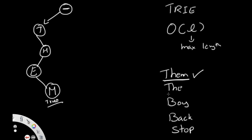Now to add 'the', we go to the master root and check if T exists — it does. H exists, E exists. Rather than creating a duplicate branch, we simply change E's boolean value to true, indicating 'the' ends there. Now our Trie contains both 'the' and 'them', sharing the same T-H-E prefix.